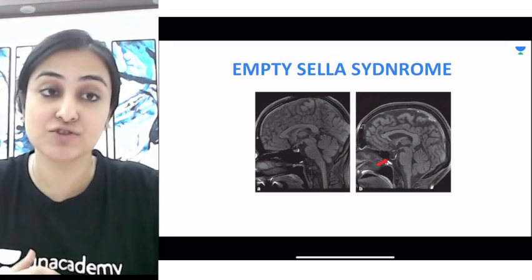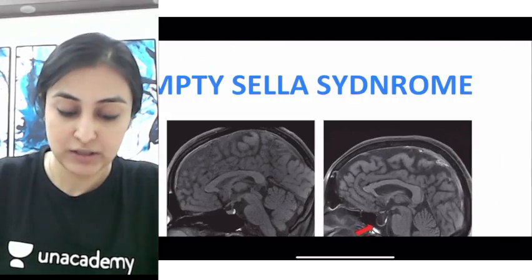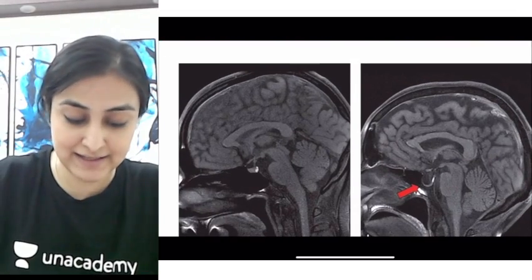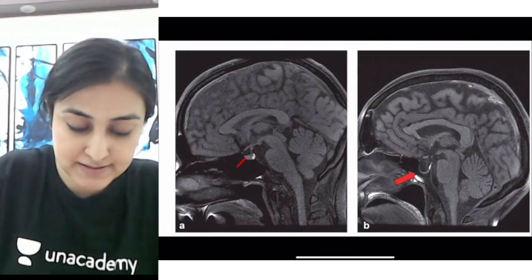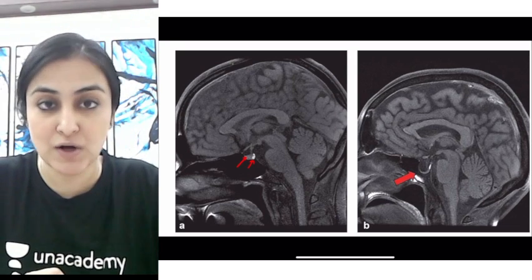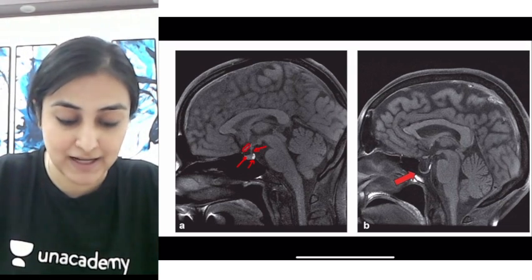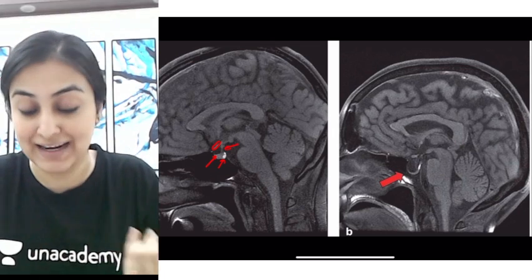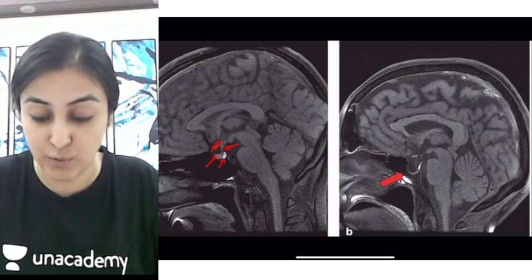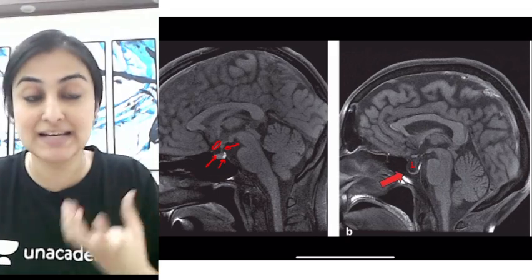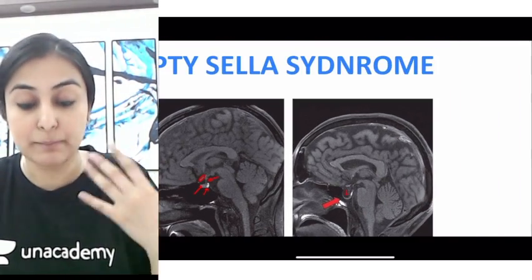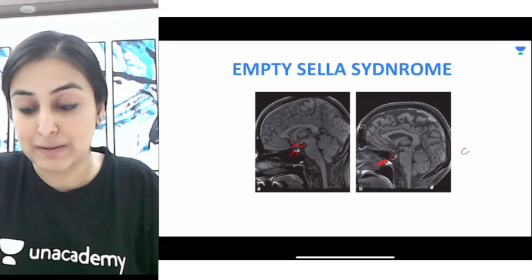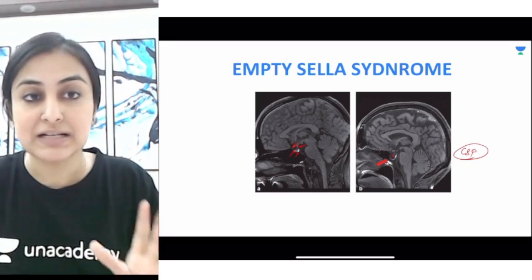Next, we have the empty sella — something very important. Here I am showing two T1-weighted sagittal MRI images. Image A is the normal image: you can see the anterior pituitary, the posterior pituitary bright spot, the stalk, and the optic chiasma. In the abnormal image, the pituitary is completely flattened on the sellar floor and you have herniation of CSF into the sella. When the pituitary is compressed or completely absent and replaced by CSF, that is called empty sella syndrome.